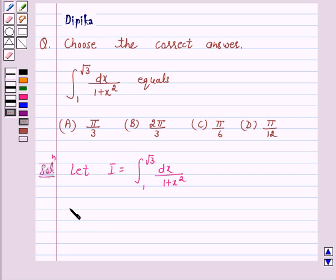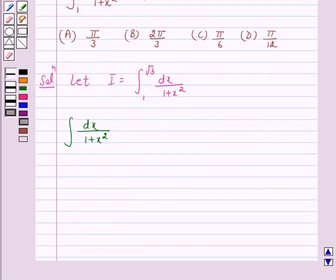Consider the indefinite integral dx upon 1 plus x square. Now this is equal to tan inverse x by 1, because the integral of 1 over x square plus a square dx is equal to 1 by a tan inverse x by a plus c.